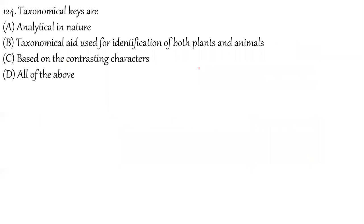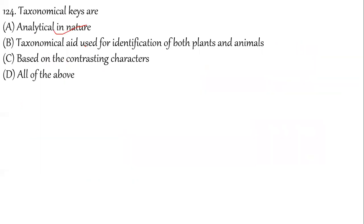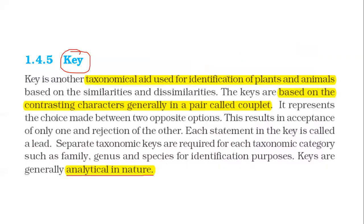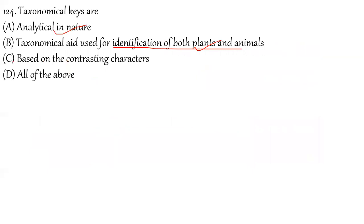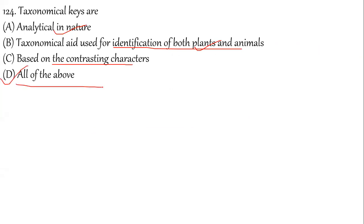Question 124: Taxonomical keys are analytical in nature — correct. They are taxonomical aids used for identification of both plants and animals — correct NCERT line. They are based on contrasting characters called couplets. All of the above are correct — the answer for question 124 is option D.